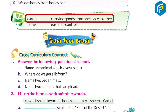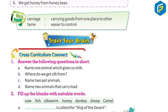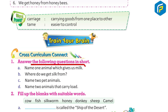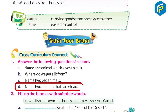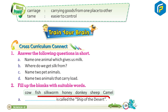Brain exercise — cross curriculum connect. Answer the following questions in short: a) Name some animals which give us milk. b) Where do we get silk from? c) Name two pet animals. d) Name two animals that carry load. Fill up the blanks with suitable words: a) dash is called the ship of the desert. b) Honeybees make dash.